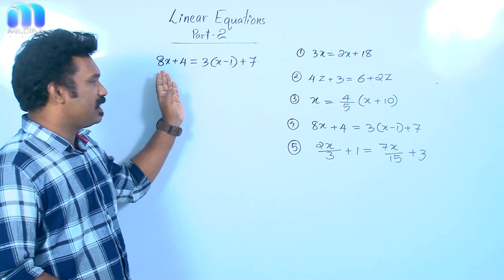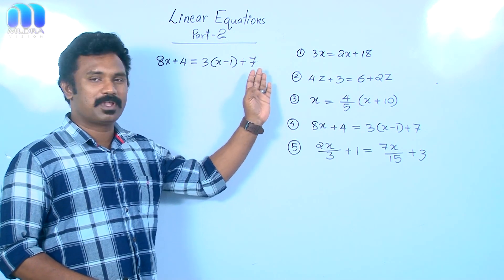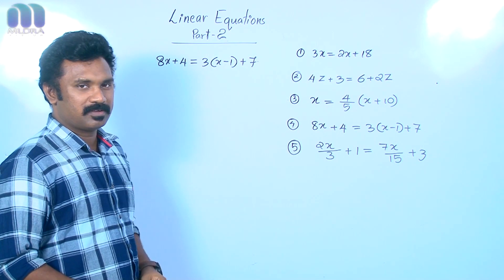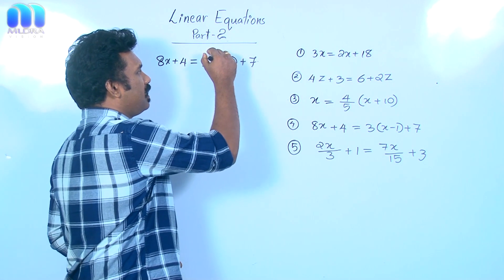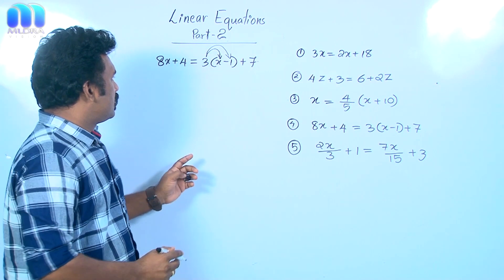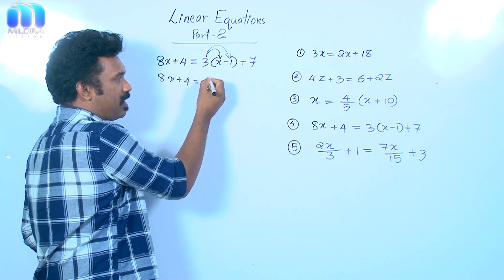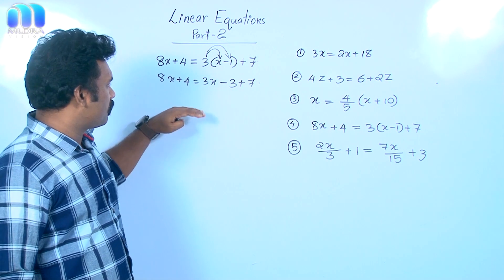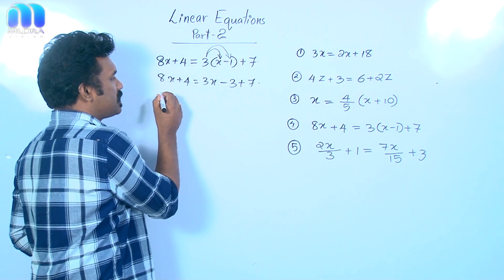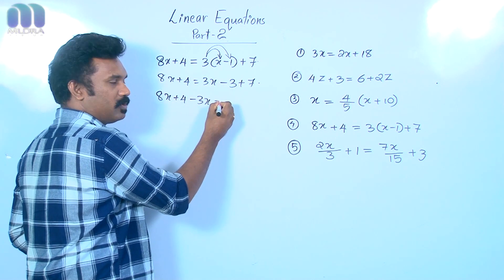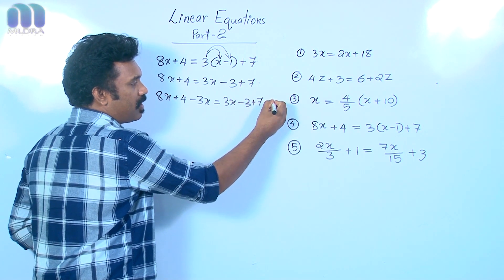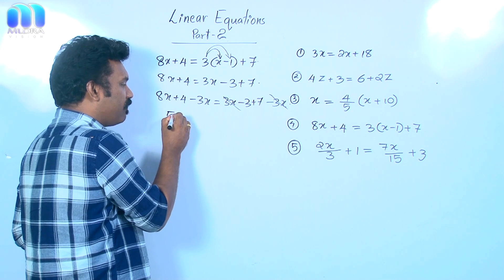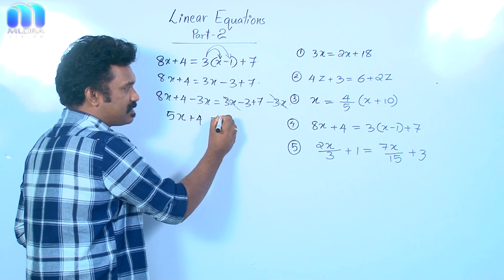Now let us see the fourth question: 8x plus 4 equal to 3 times x minus 1 plus 7. First of all, I am going to open this bracket. Using the distributive property, 3 into x minus 1 is 3x minus 3 times 1. That gives 8x plus 4 equal to 3x minus 3 plus 7. In the next step, I am going to subtract 3x from both sides: 8x plus 4 minus 3x equal to 3x minus 3 plus 7 minus 3x. 3x minus 3x becomes 0, and 8x minus 3x equals 5x.